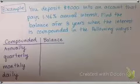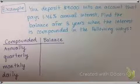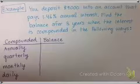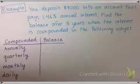So let's give this a try. You deposit $9,000 into an account that pays 1.46% annual interest, find the balance after three years when the interest is compounded in the following ways.